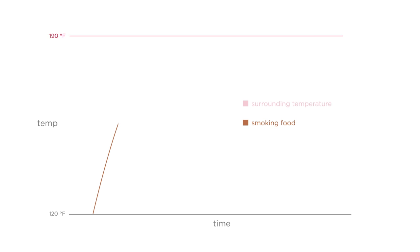Early on, the temperature of smoking food, such as a brisket, steadily climbs towards the surrounding temperature of the smoker. But after an hour or so, the cooking stalls as the temperature of the food stops rising. It might even fall slightly.